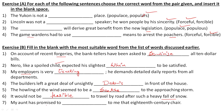My aunt has promised to dash to me that 18th century chair. The word here is what we use when something is given in a will — 'bequeath.'